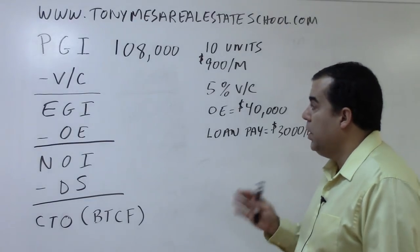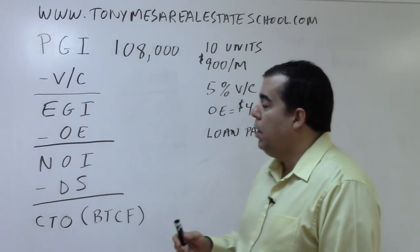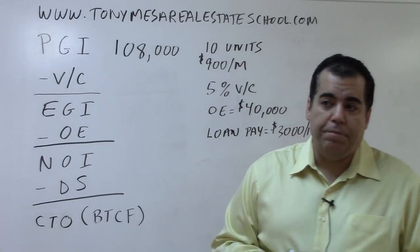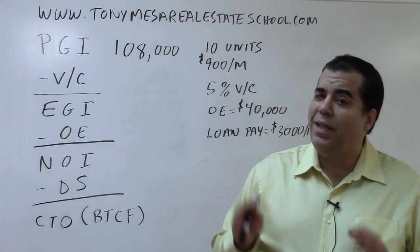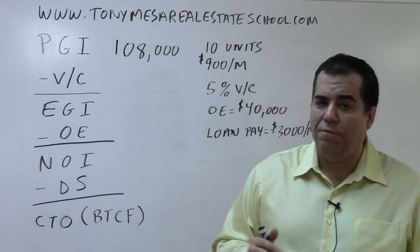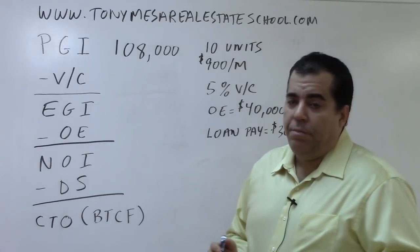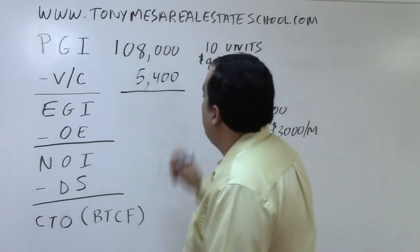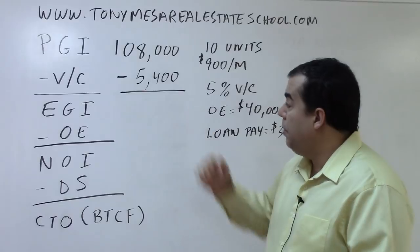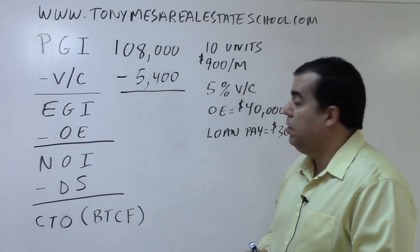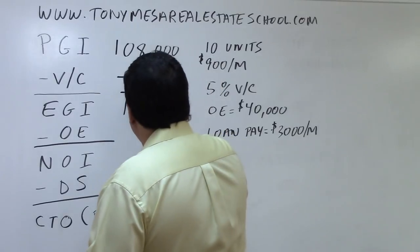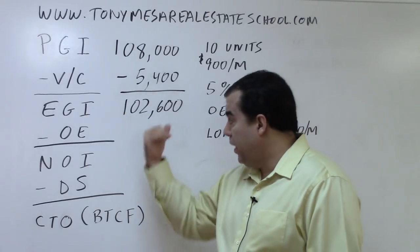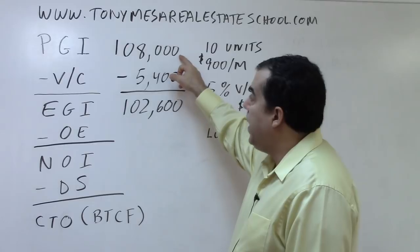That's how much would come in if all units are rented all the time with no vacancy or collection losses — but you are going to have some. In this example, the vacancy and collection losses are 5%. Five percent of $108,000 is $5,400. So the Potential Gross Income of $108,000 minus vacancy and collection losses of $5,400 gives you $102,600 — that's the Effective Gross Income, meaning how much is actually going to come in.